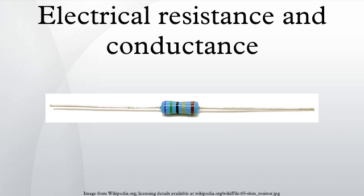Conductors are made of high conductivity materials such as metals, in particular copper and aluminium. Resistors, on the other hand, are made of a wide variety of materials depending on factors such as the desired resistance, amount of energy that it needs to dissipate, precision, and costs. Ohm's law is an empirical law relating the voltage V across an element to the current I through it: V is directly proportional to I. This law is not always true — for example, it is false for diodes, batteries, etc. However, it is true to a very good approximation for wires and resistors. Materials or objects where Ohm's law is true are called ohmic, whereas objects that do not obey Ohm's law are non-ohmic.